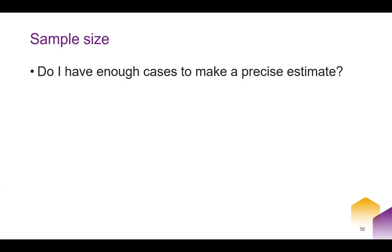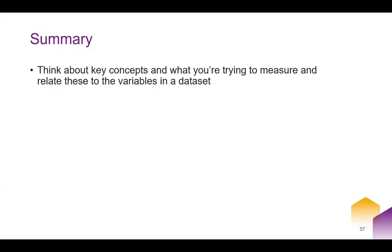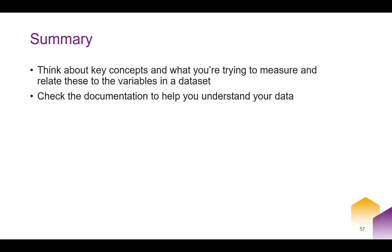A final question is whether you have enough cases to make a precise estimate. For example, the crime survey for England and Wales has a large sample size allowing for precise estimates. However, if you're interested in a particular subpopulation — such as those with disabilities or certain ethnic minority groups — there might be insufficient cases to make precise estimates. To summarize: think about your key concepts and relate them to variables in a dataset, always check the catalogue and documentation to understand your data, and make sure you're considering sampling within the process of choosing and preparing your data.